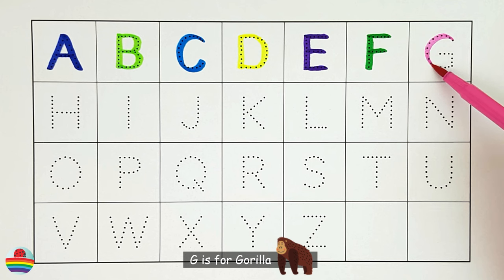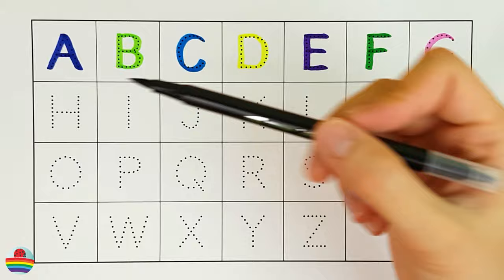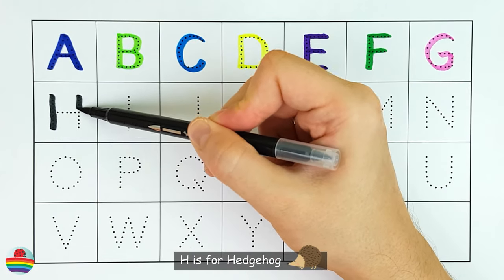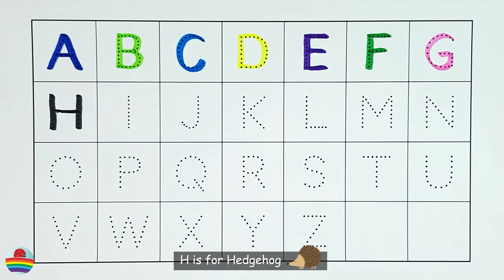G. G is for gorilla. G. H. H is for hedgehog. H.